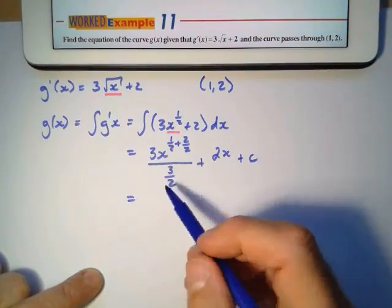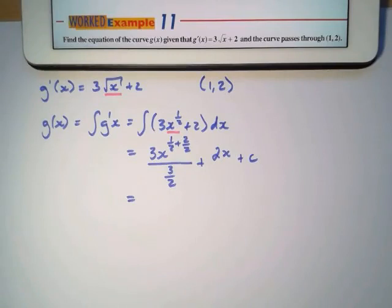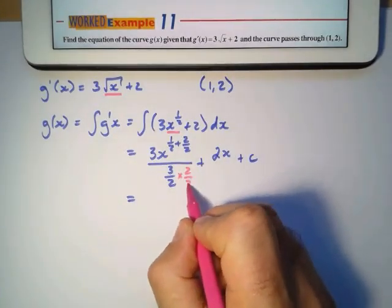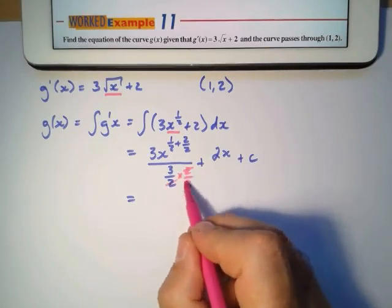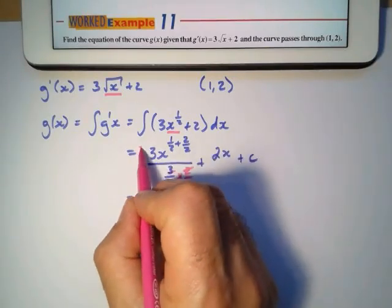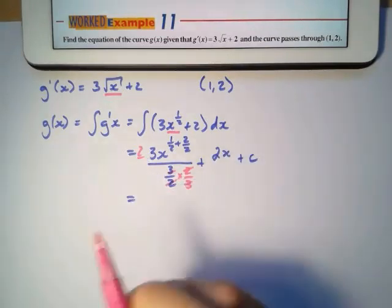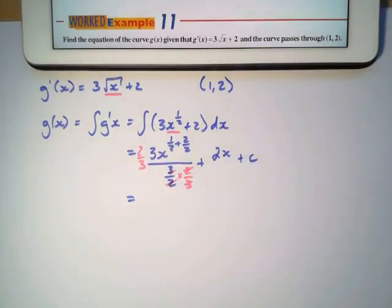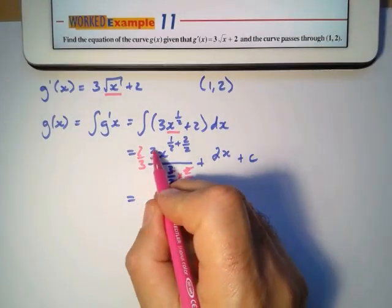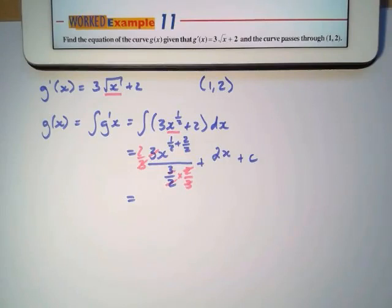Now this equals, if I divide by 3 over 2, what I do is I multiply by the reciprocal 2 over 3. So that cancels. But if I do this underneath the line, I must also do that above the line. So I'm going to multiply by 2 over 3 above the line. So 2 times 3 is 6, divide by 3 is 2. So it means that those 2 cancel.